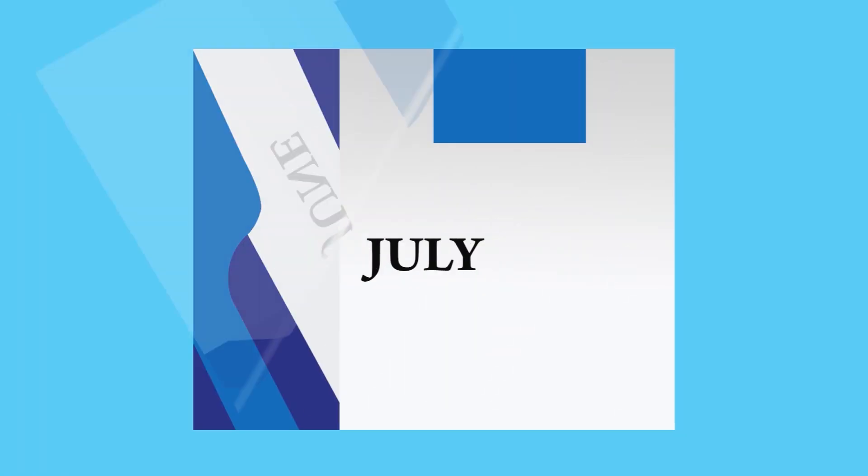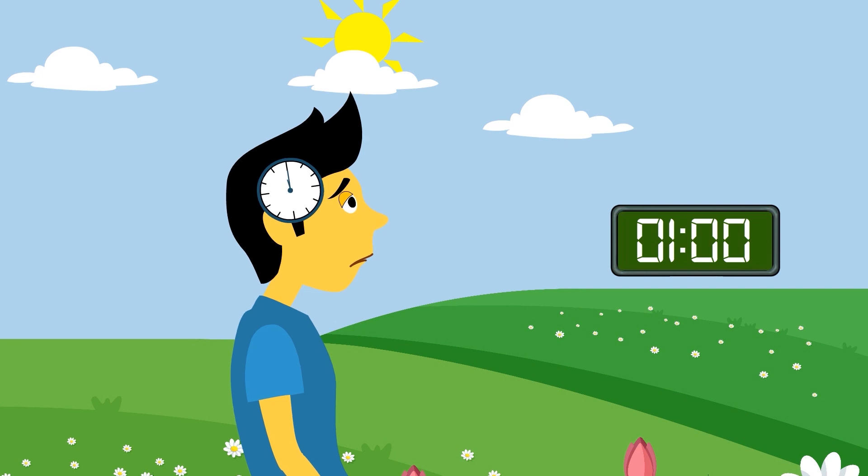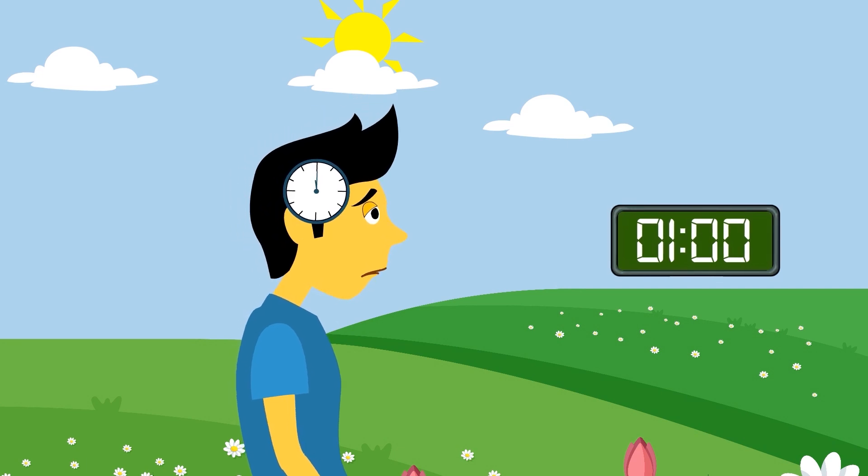However, during daylight savings time, when the Sun and body clock are at midday, our watch reads 1pm. This shows that daylight savings time causes a one-hour mismatch between our body clock and our social clock.